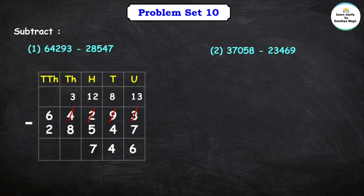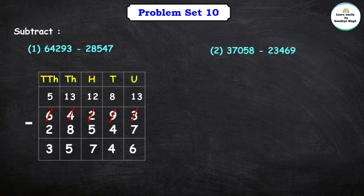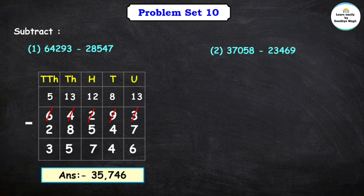Let's borrow 1 from the ten-thousands place. After subtracting 8 from 13, we get 5. Now let's subtract 2 from 5, we get 3. So here the final answer is 35,746. Let's do the next subtraction.